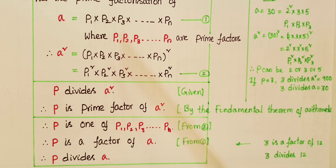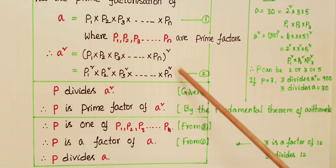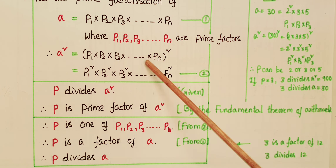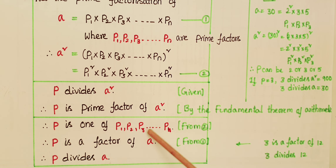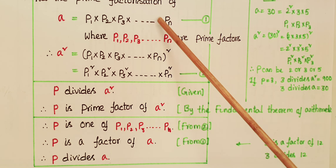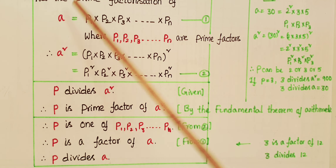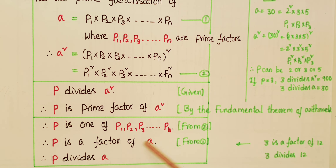The given condition is that p divides a squared, meaning a squared is exactly divisible by p, so p is a prime factor of a squared. From the second equation, the prime factors of a squared are p1, p2, p3, ..., pn. Therefore, p must be one of these prime factors. Since p1, p2, ..., pn are already prime factors of a, p is also a factor of a — meaning p divides a, and a is exactly divisible by p.